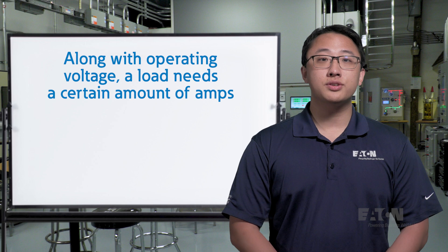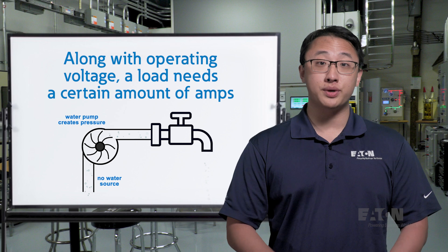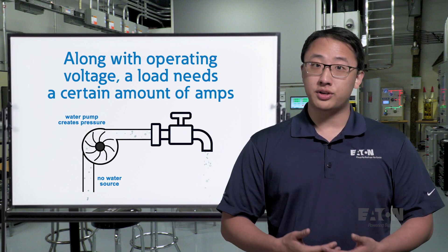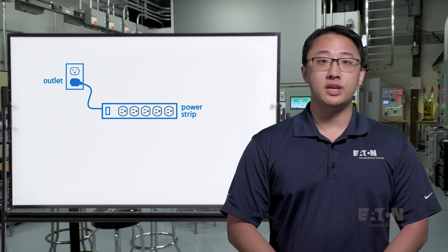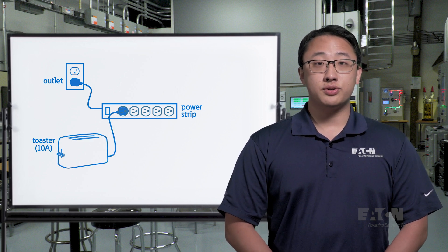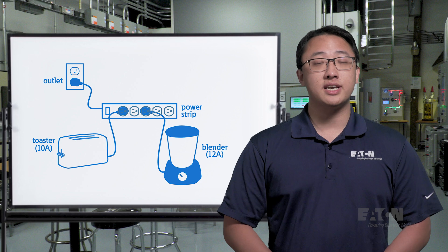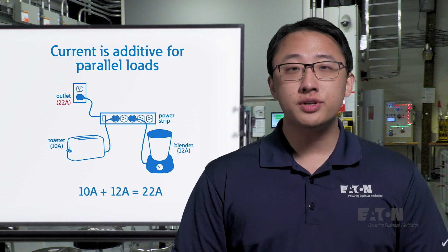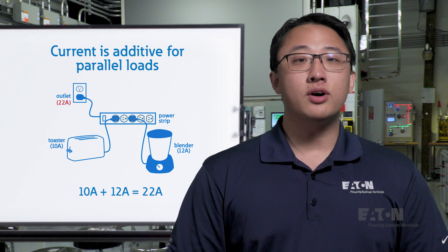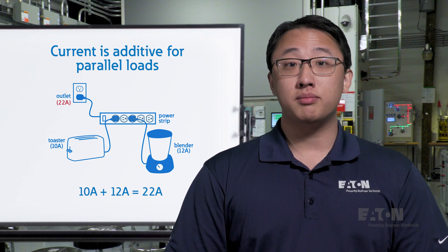Along with needing a certain operating voltage, a load will also use a certain amount of amps, or current, in order to actively run. Backing up to the water analogy, it doesn't matter how much water pressure you have if there's no water flowing to actually do anything with — water flow here is current in our electrical system. If I plug in a toaster and turn it on, it'll draw about 10 amps. I could also plug in a blender that draws 12 amps and use it at the same time as the toaster. Since current is additive for parallel loads, the total draw from the power strip is 22 amps, which could damage power strip cables or trip an upstream breaker. This is also why it isn't a good idea to daisy chain power strips.